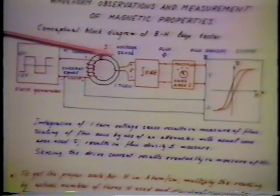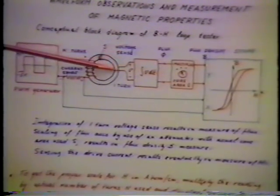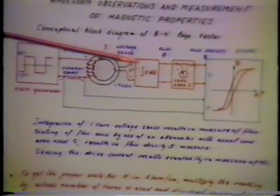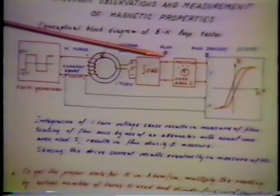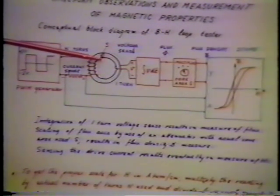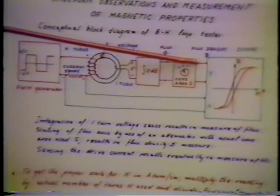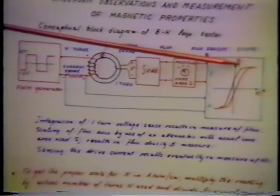Then, in order to sense the flux, we use voltage sense winding, one-turn winding, and by separate box which integrates that volt seconds, we are assessing the flux. And if we dial the core cross-section area of the core, we can essentially divide that flux with the cross-section of the core and get the reading of the flux density.